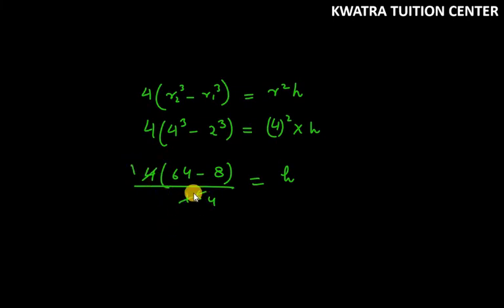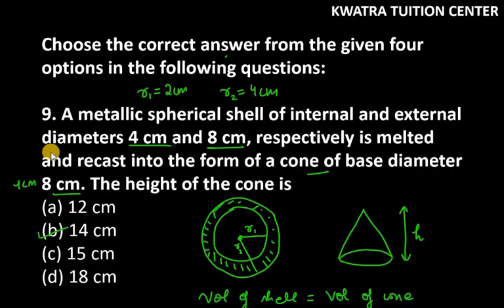Reduce 4 and 16, so 56 is left, and here is 4. Divide 56 by 4, this will be 1, and this will be 14. So the height is 14 cm, that is B part.